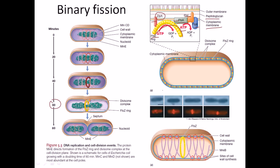That's the whole process of binary fission in a slightly detailed view inside bacteria. Though it looks simple — 1 to 2, 2 to 4, 4 to 8 — complicated molecular machineries are involved. That's it, guys. I hope that's helpful. Thank you.